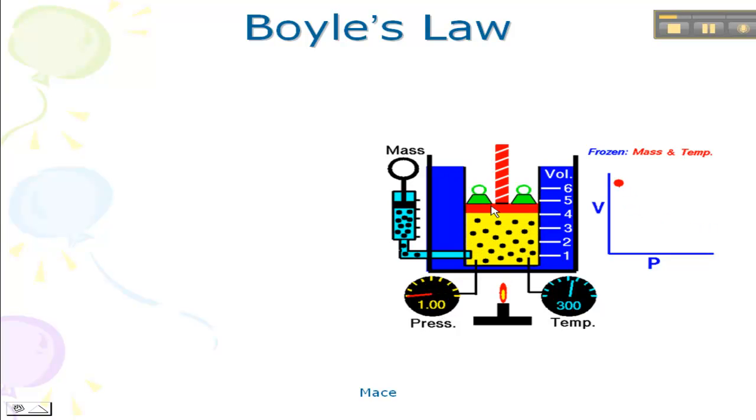So as we compress the gas into a smaller volume, those particles are getting closer and closer together, which is increasing the pressure. So if we go from 4 down to 2, notice that our pressure goes from 1 to 2. So as the volume decreases, the pressure increases by the same factor.